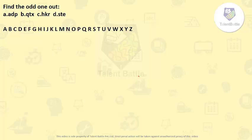Find the odd one out: ADP, QTX, HKR, and STE. So first A, D, P.